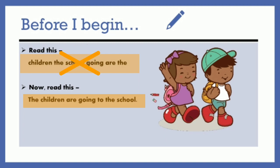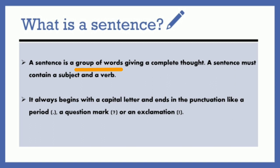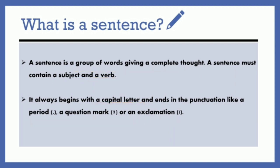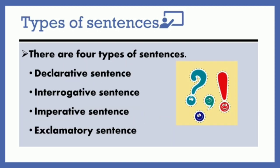So, what actually a sentence is? Well, a sentence is a group of words giving a complete thought. But a sentence must contain a subject and a verb. It always begins with a capital letter and ends in punctuation like a period, a question mark, or an exclamation.